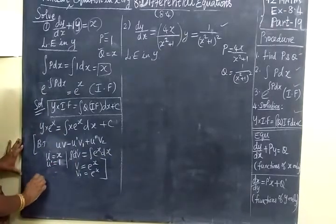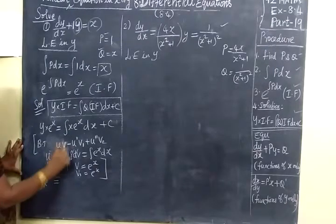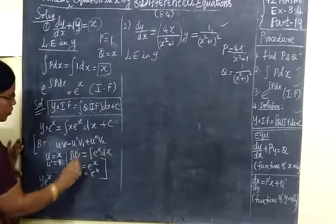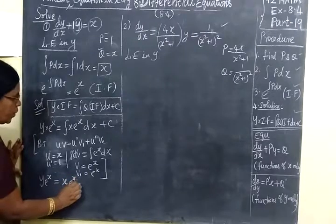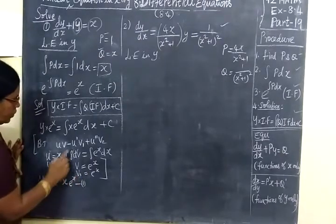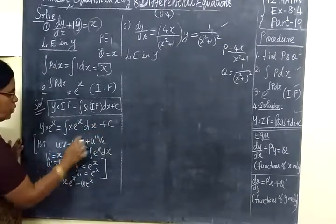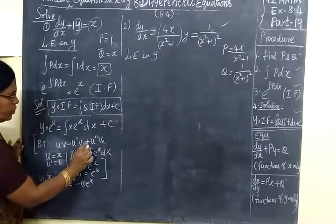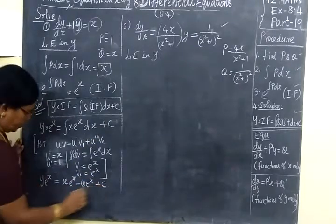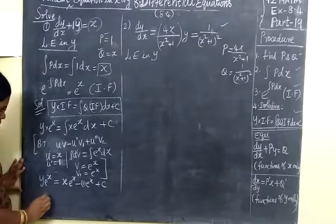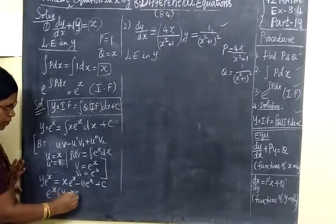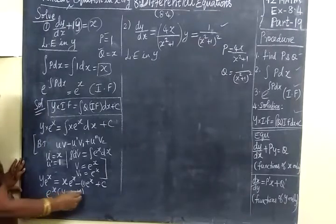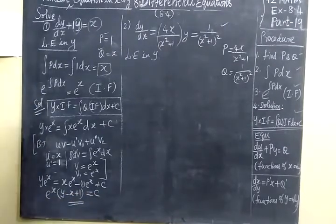Now the formula is applied. So y times e to the power S equals U times V, which is x times e to the power S, minus U' times V1, which is 1 times e to the power S. Bringing e to the power S common, we get e to the power S times the bracket x minus 1, plus C. So the answer simplifies.